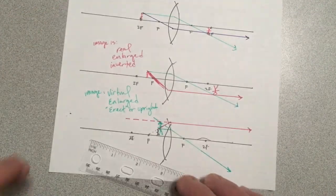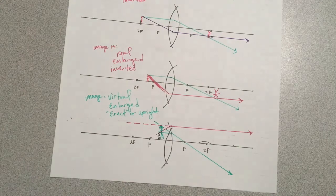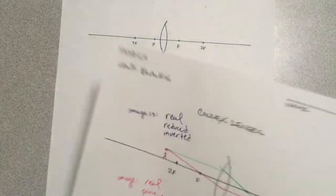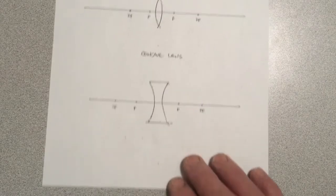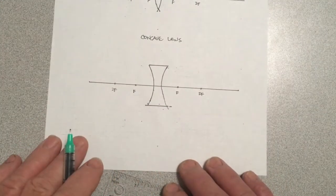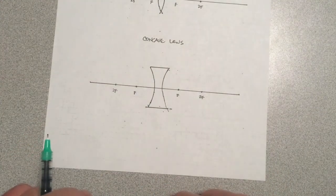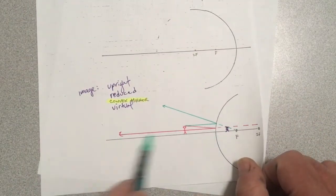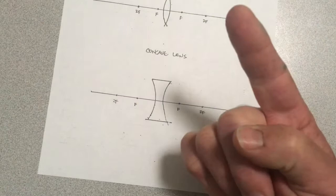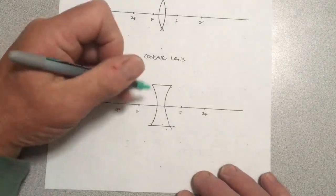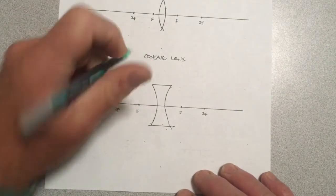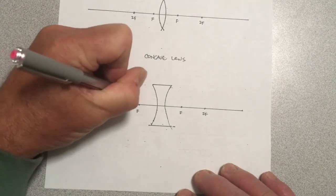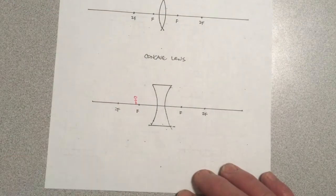We have one more drawing to do. It may be the hardest one to remember and maybe the hardest one, period, and that is the concave lens, the diverging lens. Like the convex mirror, it doesn't really matter where I put the object because there's only one case. So I'm just going to put it near F.